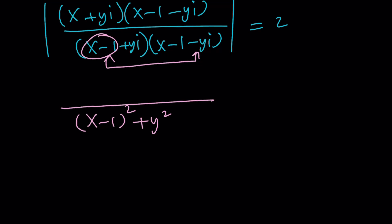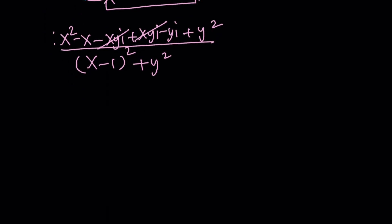And on top, we can multiply x times x minus 1, x squared minus x, and then minus xyi, and then plus x minus 1 times yi, which you can write as xyi minus yi, and then finally, yi times negative yi is going to be negative y squared i squared, which is positive y squared. Great. xyi cancels out, leaving us with something simpler, and of course, don't forget the absolute value, and set it equal to 2.